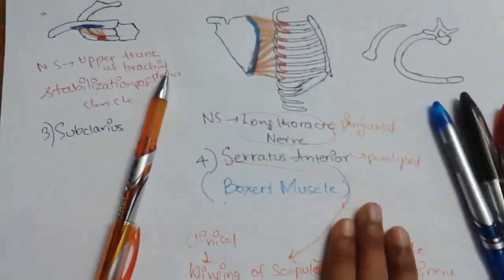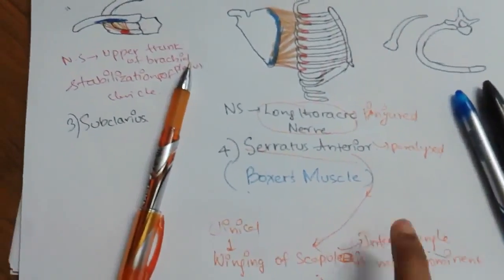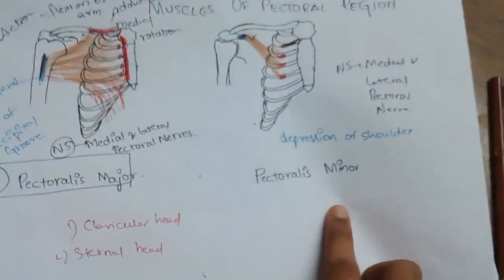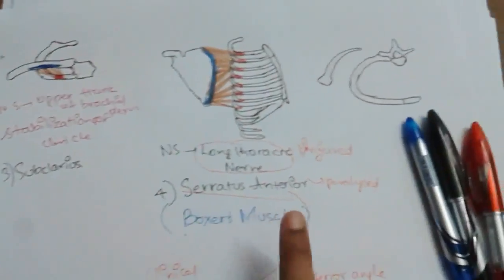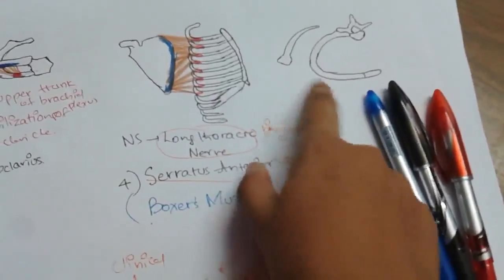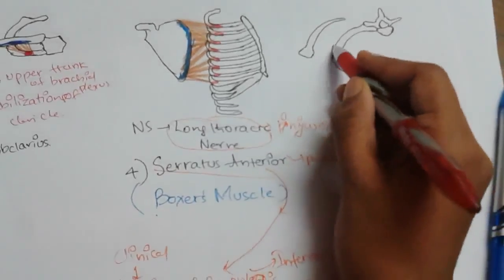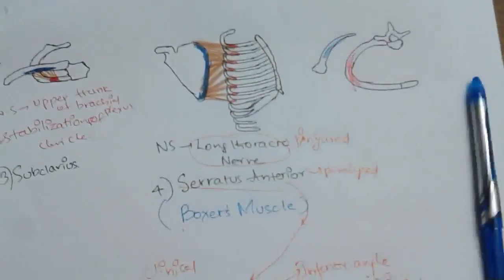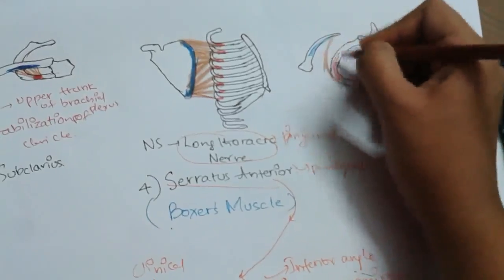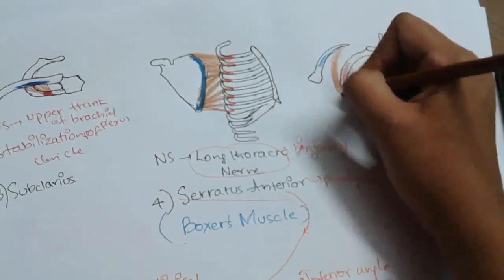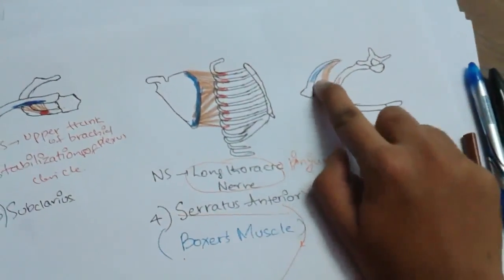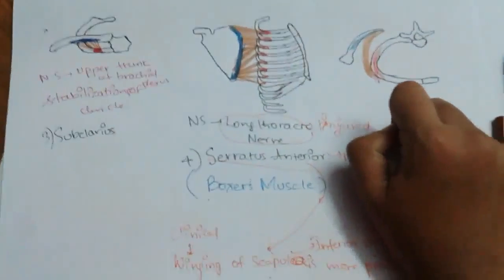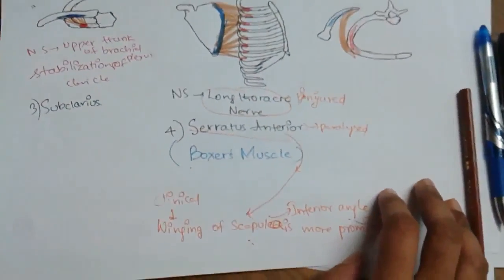So we have now learned about the four muscles of the pectoral region: pectoralis major, pectoralis minor, subclavius, and serratus anterior. Serratus anterior is originated from the ribs and inserted into the scapula, producing protraction when it contracts. This is the end of today's lecture on the muscles of the pectoral region.